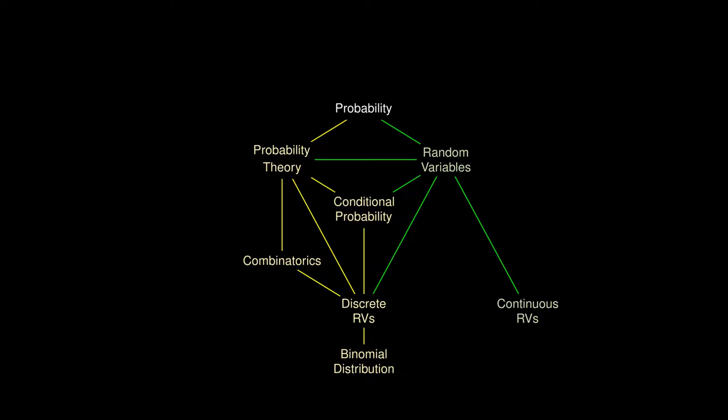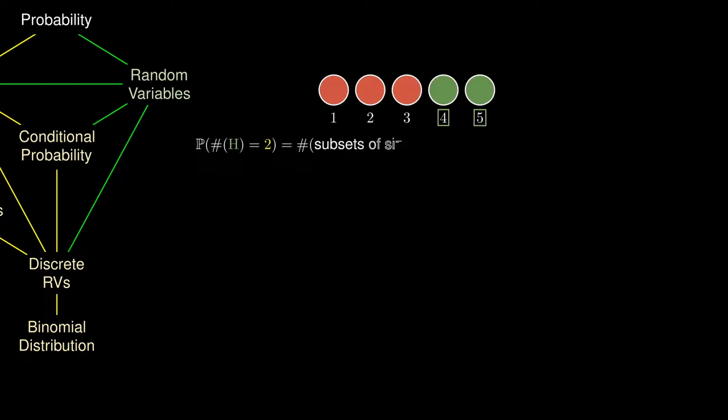There's more to be said about discrete random variables before going to continuous random variables. Suppose we want to toss five coins and count the number of heads that arise from these coin tosses. One possibility is that the first two coins turn up heads, while the rest turn up tails. There are many other choices of two coins from these five coins, and the total probability is the number of subsets of size 2 multiplied by the probability of obtaining the sequence of two heads and three tails.